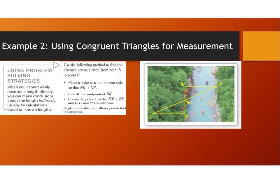You can use the following method to find the distance across the river from point N to point P. Place a stake at K on the near side so that NK is perpendicular to NP, forming a right angle. Find point M, which is going to be the midpoint of NK, then locate point L so that NK is perpendicular to KL, also forming a right angle, with P, N, and M collinear.